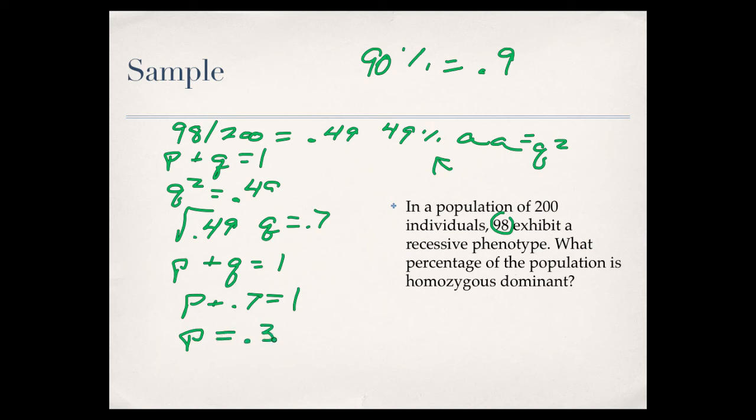Final step, we need to figure out what, because ultimately, they want to know what percentage of the population is homozygous dominant. We know that homozygous dominant is big A, big A. Also, we know that that is P squared. So, we need to take 0.3, square it. That equals 0.09. So, this means that 9% of our population is big A, big A. All right, so that is how you would figure that out.